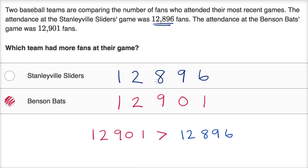You can also just think about it by counting up: 12,896, 12,897, 12,898, 12,899, 12,900, and then 12,901. Let's do another example.